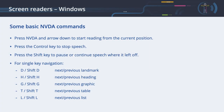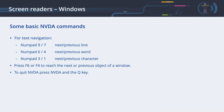Some basic NVDA commands: Press NVDA and arrow down to start reading from the current position. Press the Control key to stop speech. Press the Shift key to pause or continue speech where it left off. For single key navigation: Press D or Shift+D to reach the next or previous landmark. Press H or Shift+H to reach the next or previous heading. Press G or Shift+G for the next or previous graphic. Press T or Shift+T for the next or previous table. Press L or Shift+L for the next or previous list. For text navigation, use the numbers on the numeric keypad: Press 9 or 7 for the next or previous line, 6 or 4 for the next or previous word, 3 or 1 for the next or previous character. Press F6 or F4 to reach the next or previous object of a window. To quit NVDA, press NVDA and the Q key.